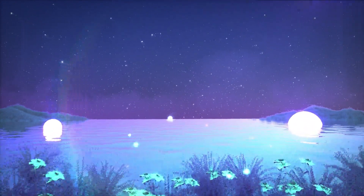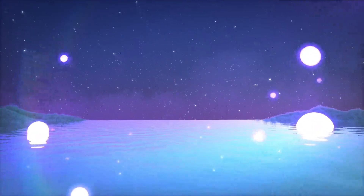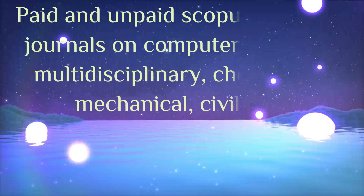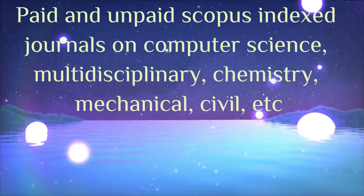Hi everyone, welcome back. I'm Dr. Gomati. Today we are going to talk about five journals — both paid and free — related to multidisciplinary fields including computer science, chemistry, and environmental science. We'll also look at the key aspects you should consider when choosing a journal and how to check how long it will take to publish your paper.